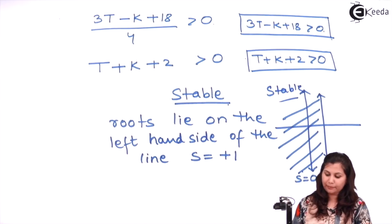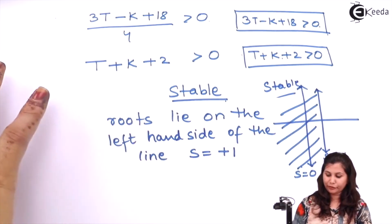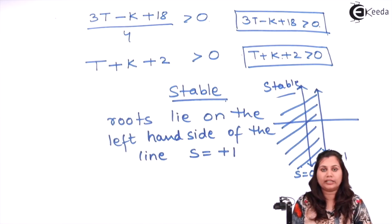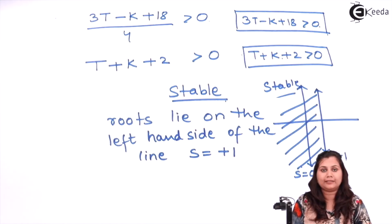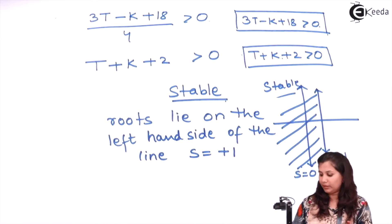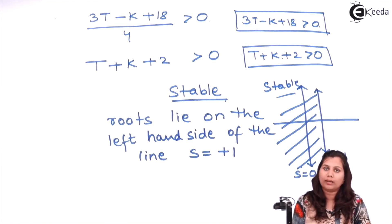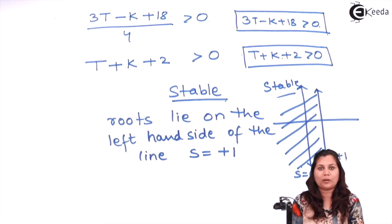So this is our problem. In the first part we found the relationship between T and K for which the system is stable. In the second part we determined the relationship between T and K for which the system is again stable, but now it is stable around the line S equals to plus 1. I hope this problem is clear to you. Thank you.